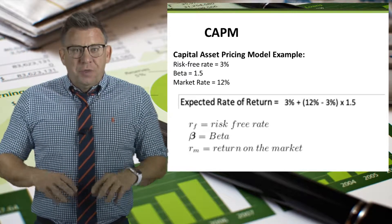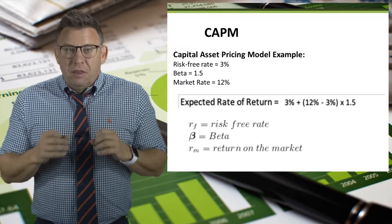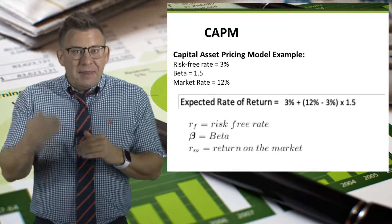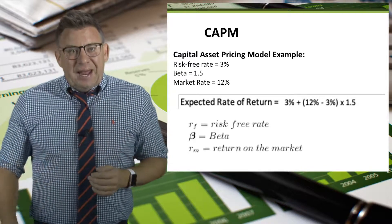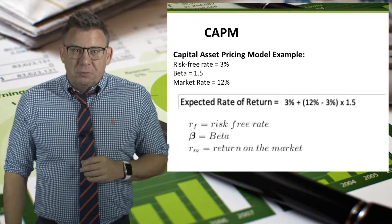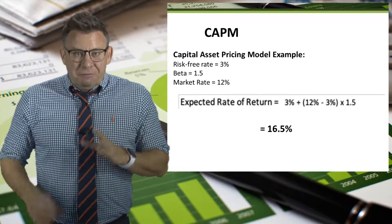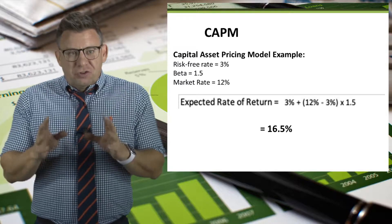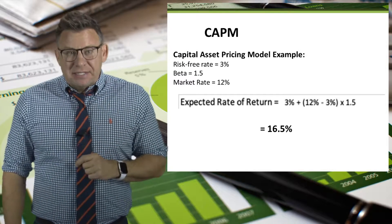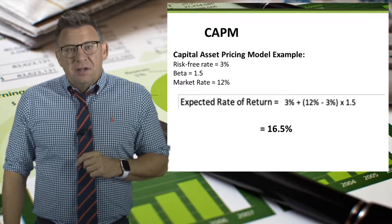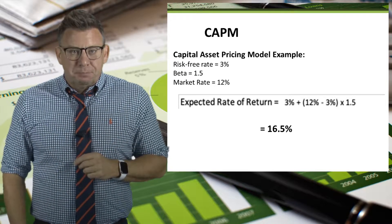Do the parentheses calculation first, then multiply that by beta, and finally add the risk-free rate. If you follow the order of operations correctly, you should get 16.5% as the expected return.